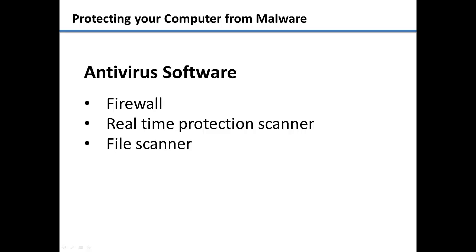Antivirus software does exactly what the name says — it tries to prevent all types of malware from getting on your computer. They will normally consist of three parts: a firewall, a real-time protection scanner, and a file scanner. The firewall monitors all of the network traffic, or data, going in and out of your computer to an outside source like the internet. Real-time protection monitors your computer for any suspicious malware activity.